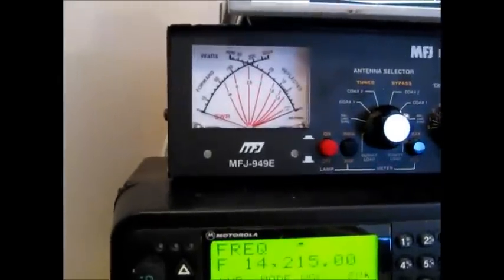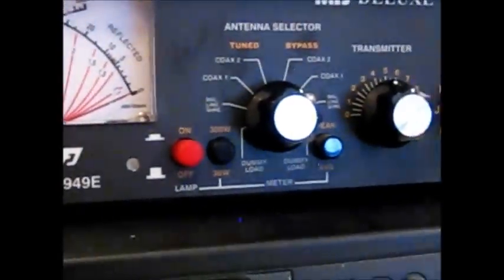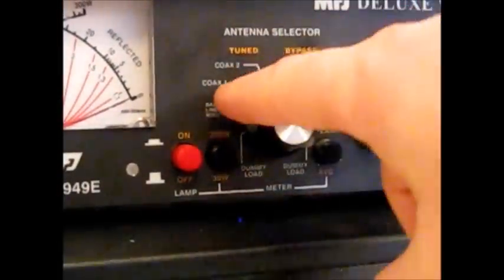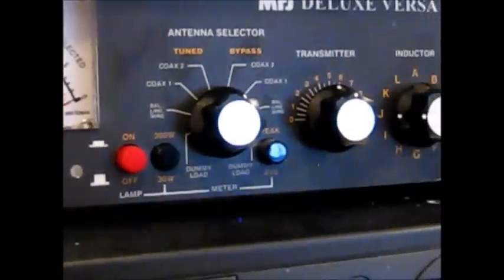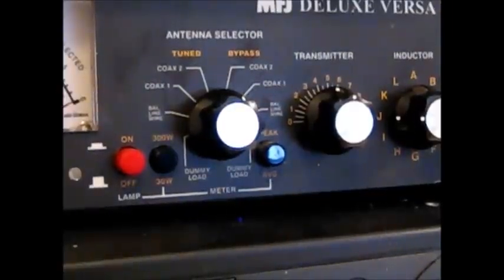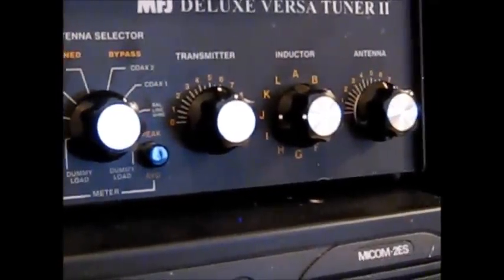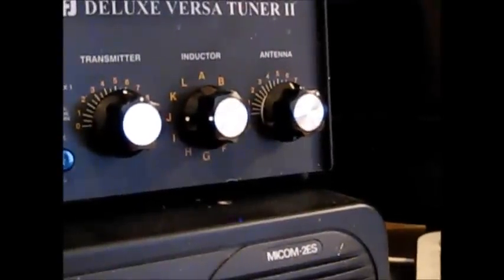You have a cross needle watt meter, an antenna coax switch, and this tuner allows you to have two antennas, coax 1 and coax 2. You have your transmitter capacitor adjustment as part of the T circuit. You have the inductor circuit knob and then you have the antenna capacitor and this is all for tuning.